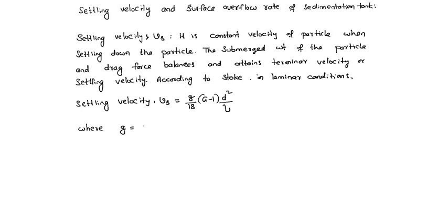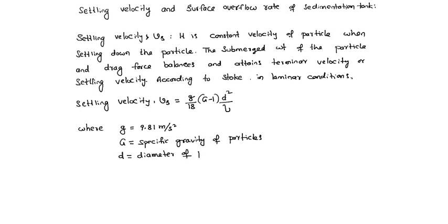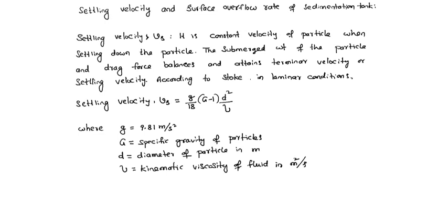In this formula, g is the acceleration due to gravity equal to 9.81 m/s², G is the specific gravity of the particles, d is the diameter of the particle in meters, and ν is the kinematic viscosity of the fluid in m²/s.